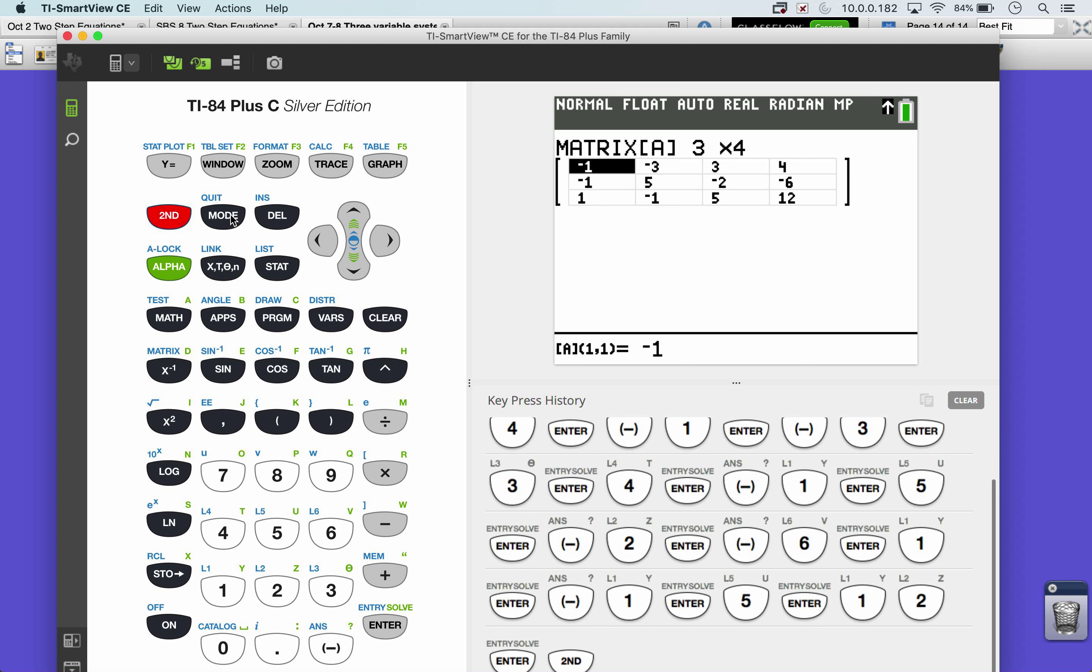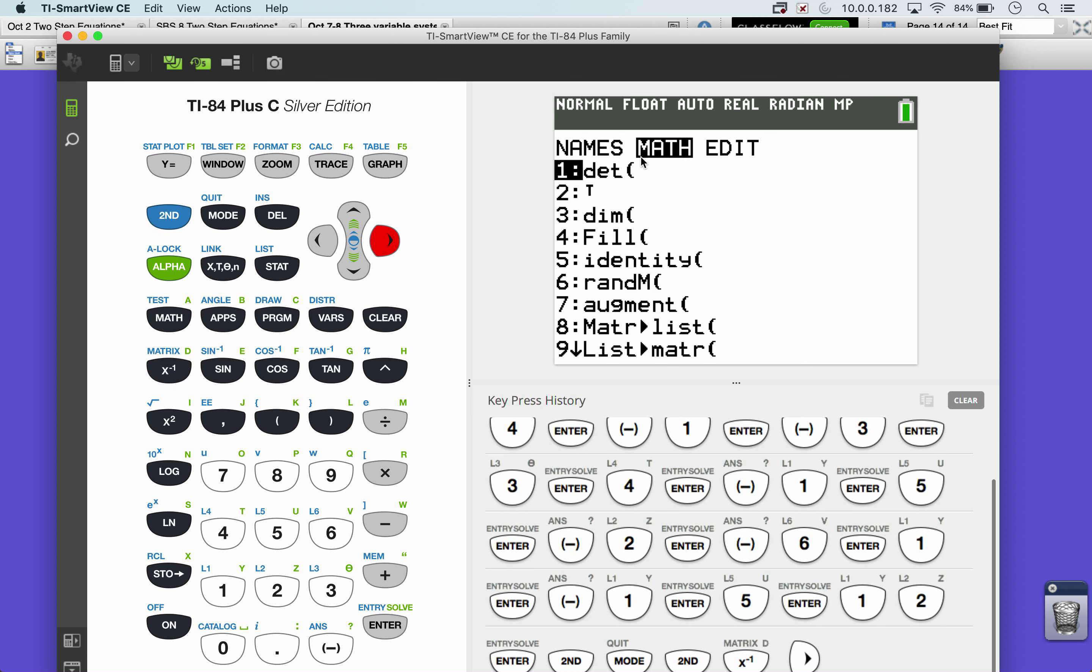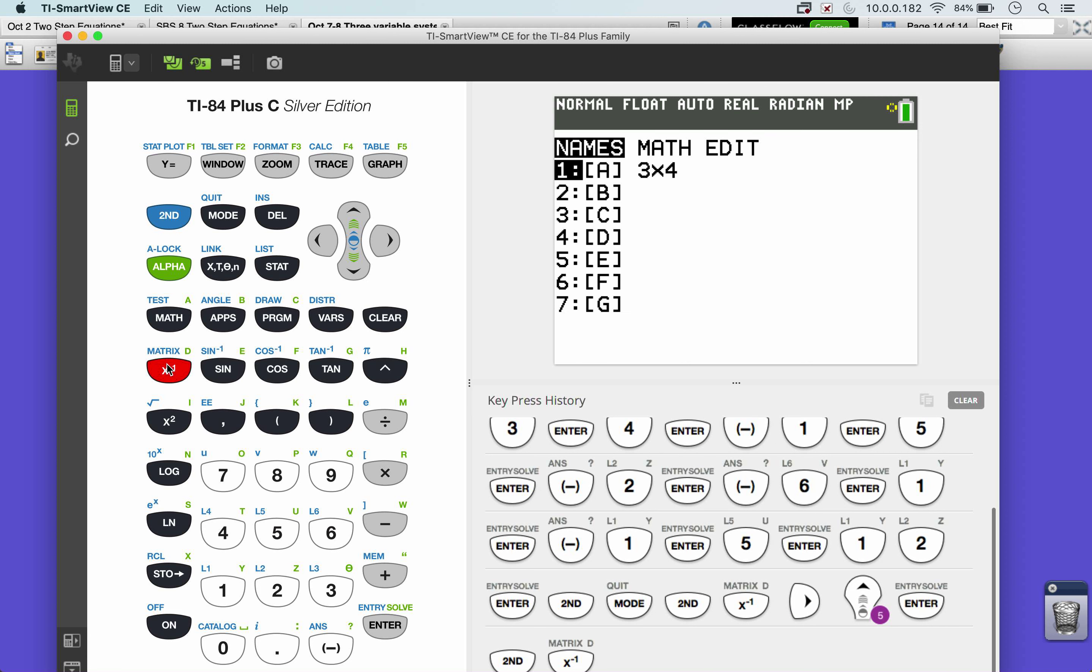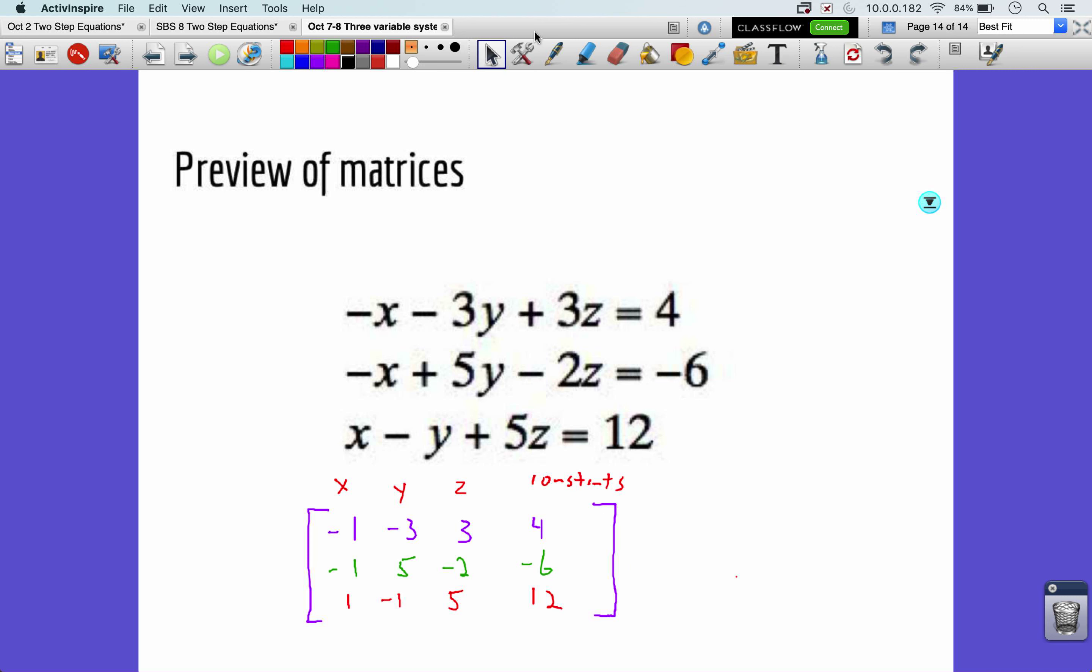All right. Now that the matrix is in the calculator, you've got to get out of the matrix by doing second quit. Then immediately go back into the matrix by doing second matrix. Go over to just math this time and scroll up until you get to RREF, which stands for reduced row echelon form. Hit enter. And now we want to plug in the matrix we just made. So, we're going to go to the matrix a third time, second matrix. Press A to select the first one. What it's going to give us is a matrix that looks like this. Put this back into terms of the problem. So, we have 1x equals 2, 1y equals 0, and 1z equals 2. So, this is our ordered pair down the last side. 2, 0, 2.